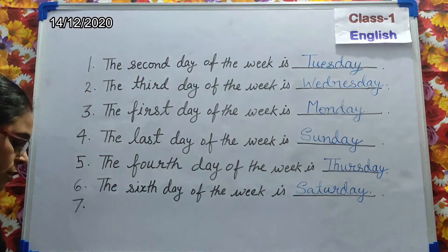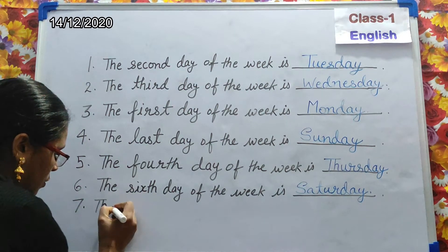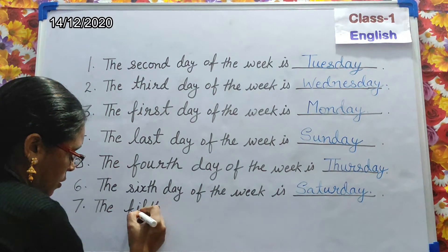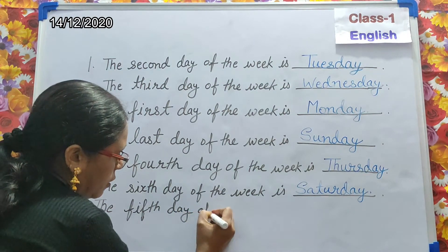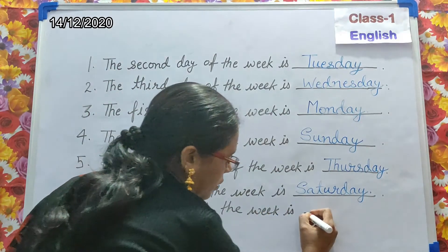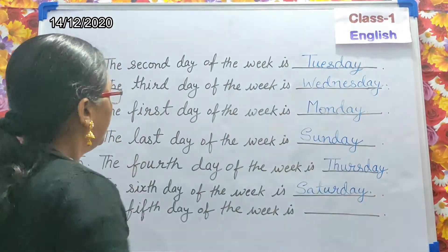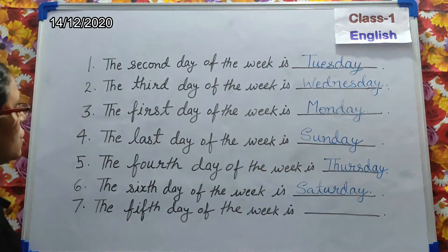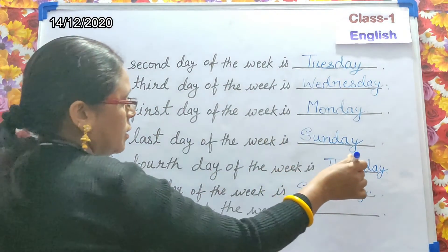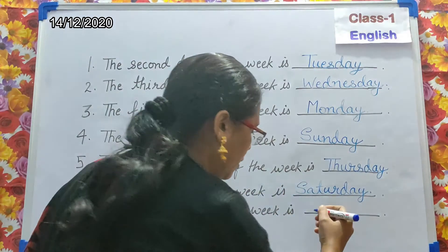The fifth day of the week is? The fifth — F-I-F-T-H — day of the week. First is Monday, second is Tuesday, third is Wednesday, fourth is Thursday, and your fifth is Friday. All of you write Friday.